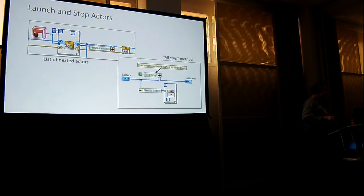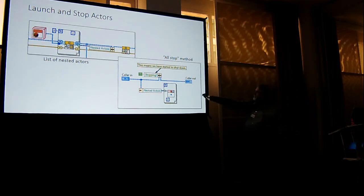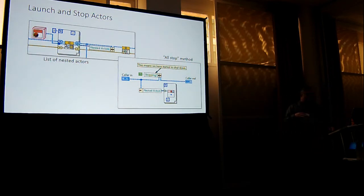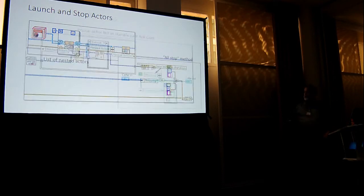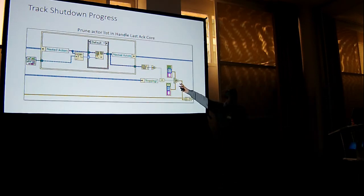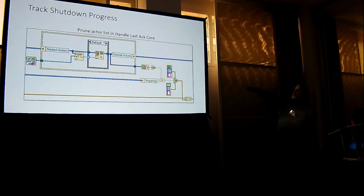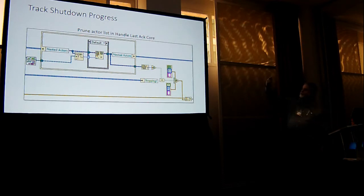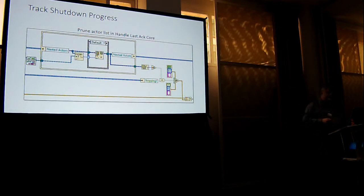I need an all-stop method, a flag that says I'm now in a stopping state, and I need to track my shutdown process. I can use error 43 again — if I'm stopping and my nested actor count is zero, I can stop. If my actor count is zero I pull an actor out of my list. Eventually I'll get to zero actors and I can stop.